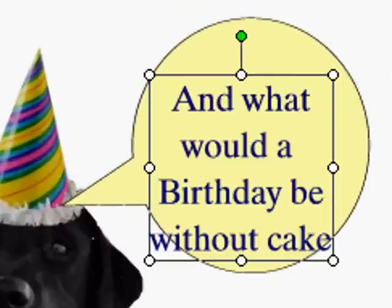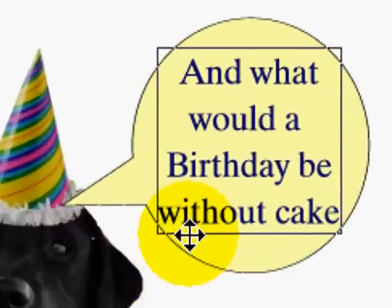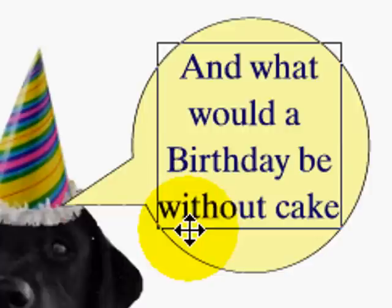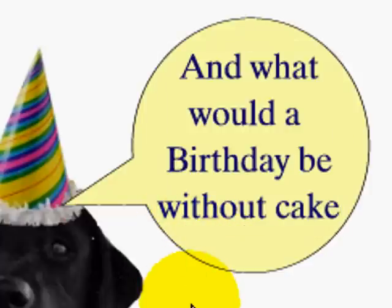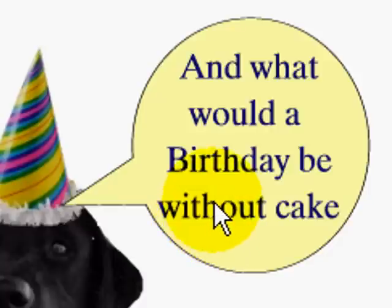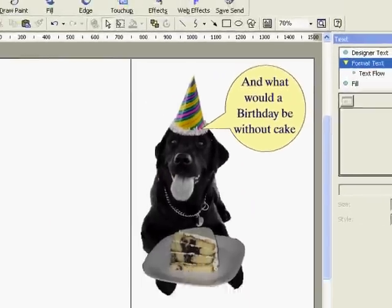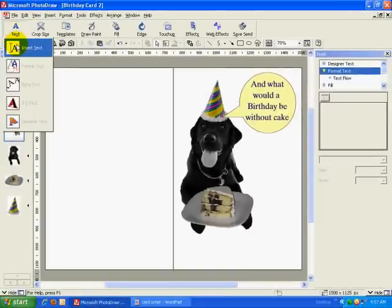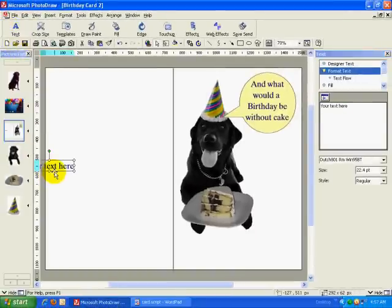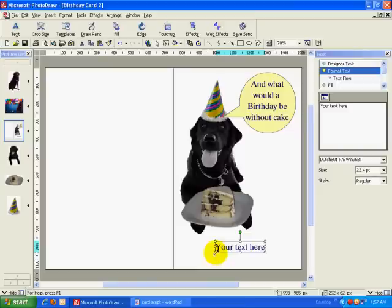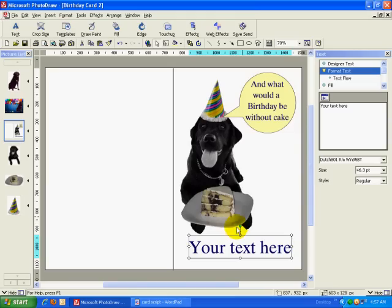The text in this thought balloon will read: And what would a birthday be without cake. Finally, I will insert another block of text beneath the image of my dog that reads Happy Birthday. I would like to use a more cursive font for this block of text. I want it to be filled with a blue color and have a yellow outline, so I will choose these attributes in those panels.